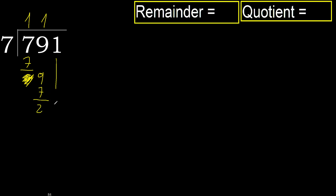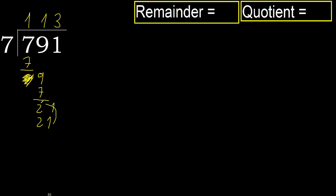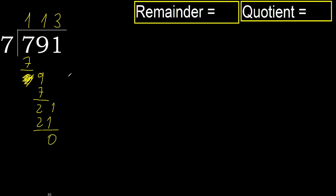Subtract, then bring down next digit: 21. 7 multiplied by 3 is 21, which is not greater. Subtract. The next digit is not a number, therefore finish it.